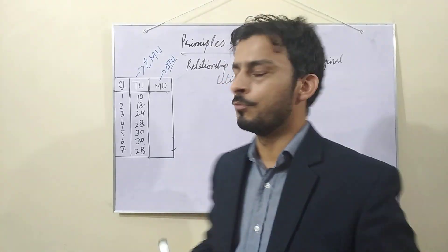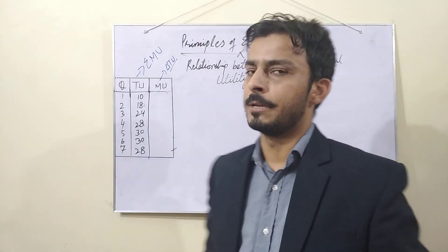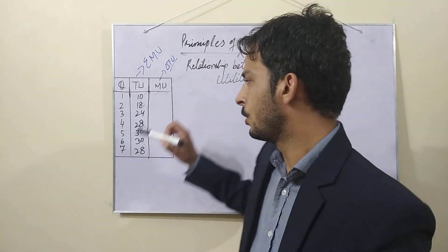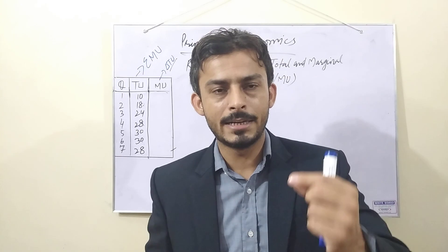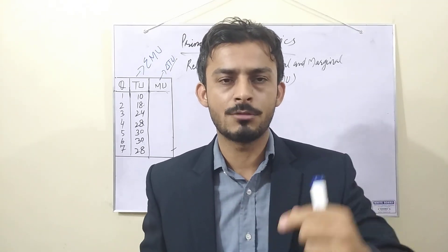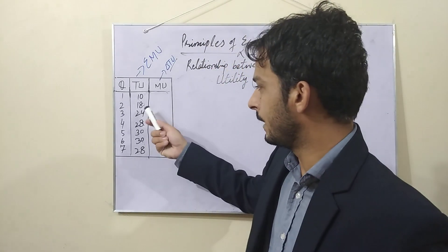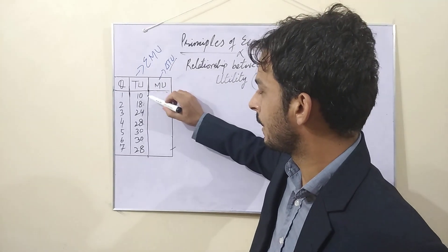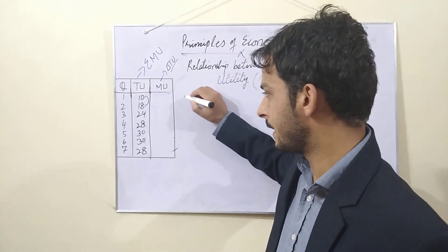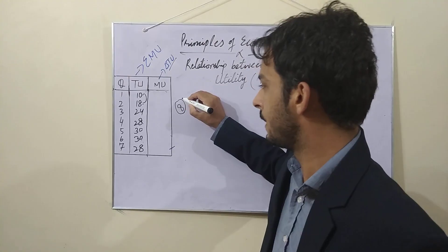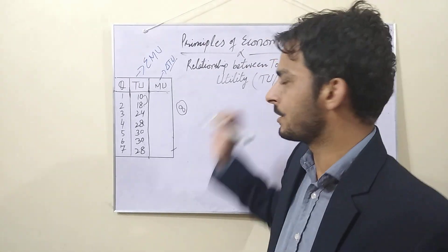When he consumed the first slice of the pizza, he received 10 utility. When he consumed the second slice, he received 18 utility. Now, when he consumed the first additional unit, when he consumed the first unit, what is the difference? What is the change in total utility? How many changes? Eight changes.